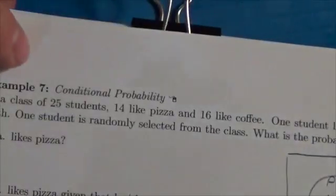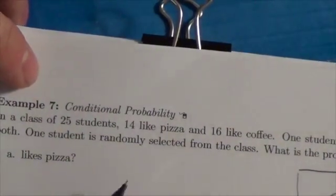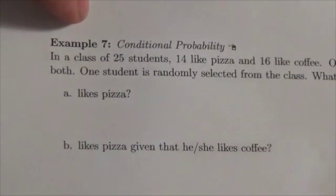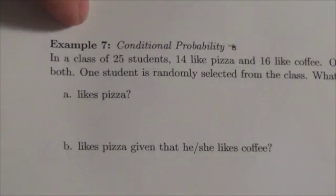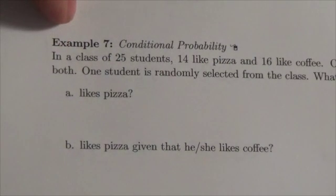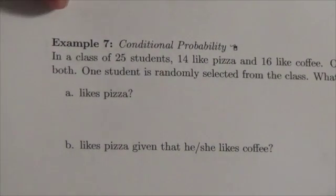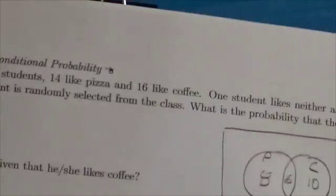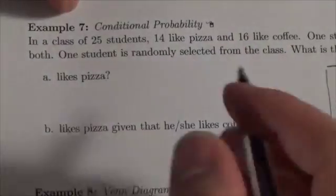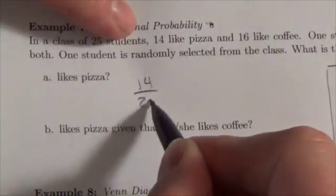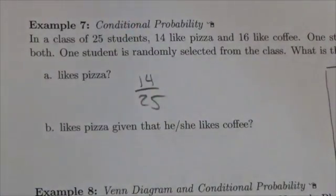What is the probability that a student likes pizza? Of the 25 students in this group, we've got 14 who like pizza. So the probability is 14 out of 25. That's pretty straightforward. You almost didn't need the Venn diagram for that.